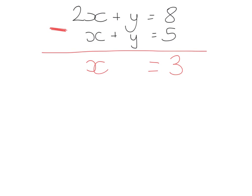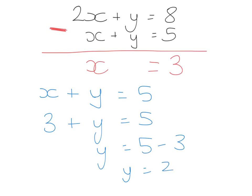I'm then going to look at this second equation and say, well, if I know that x plus y equals 5, if x is equal to 3, then that must be 3 plus y equals 5. To work out y, I'm just going to do 5 take 3, so y must be 2. So my overall answer for this question is x equals 3, y equals 2.